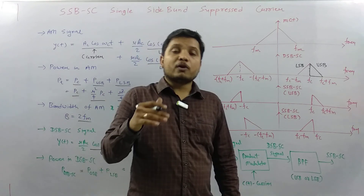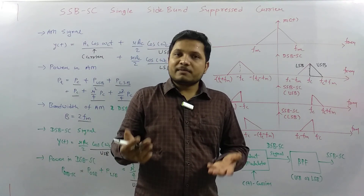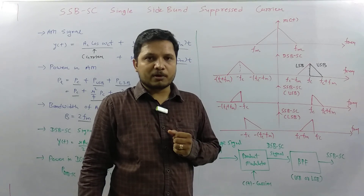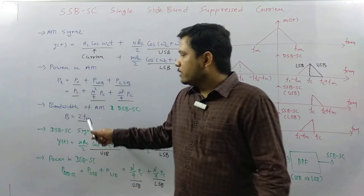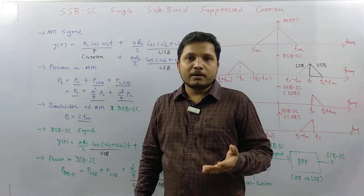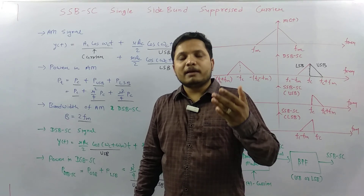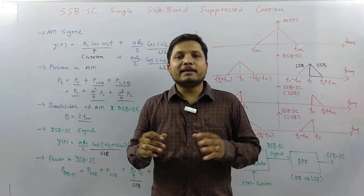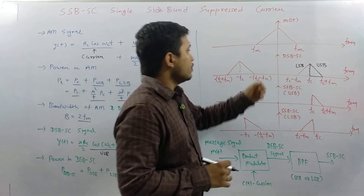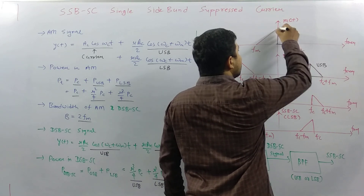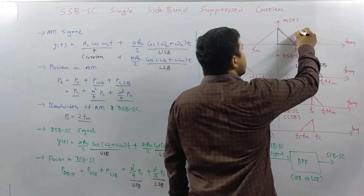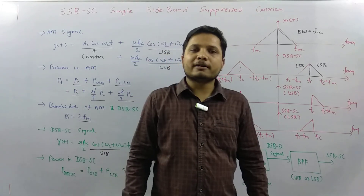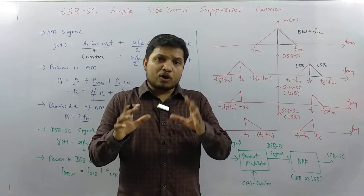Since upper sideband and lower sideband have identical characteristics with respect to the carrier, it is not compulsory to send both. From any one of LSB or USB, one can easily extract the complete original information. Looking at bandwidth — the modulating signal has bandwidth FM, but DSB-SC and AM signals both have bandwidth 2FM. So we are wasting bandwidth by sending double the bandwidth of the original information.